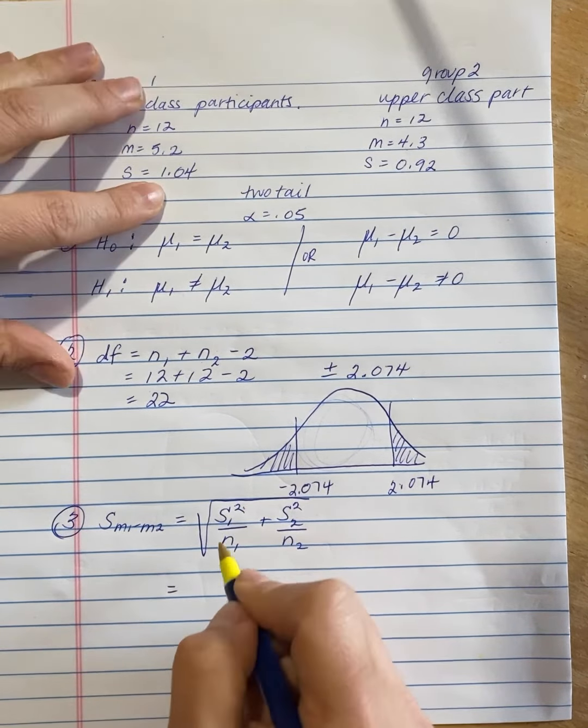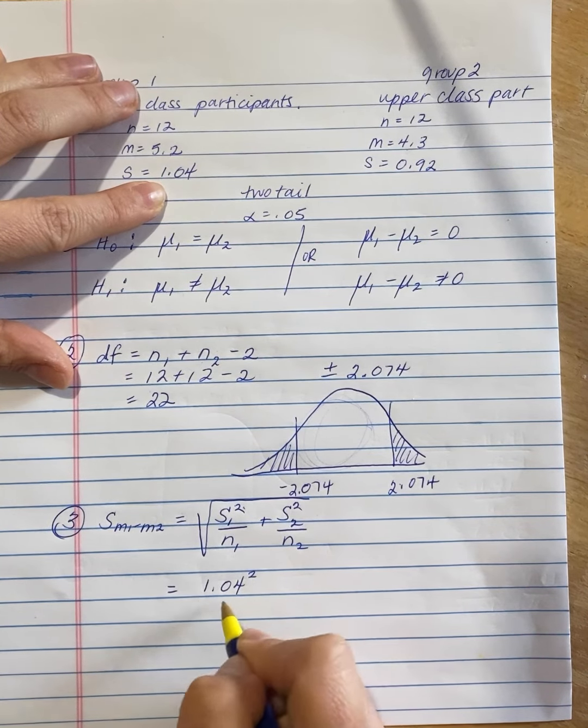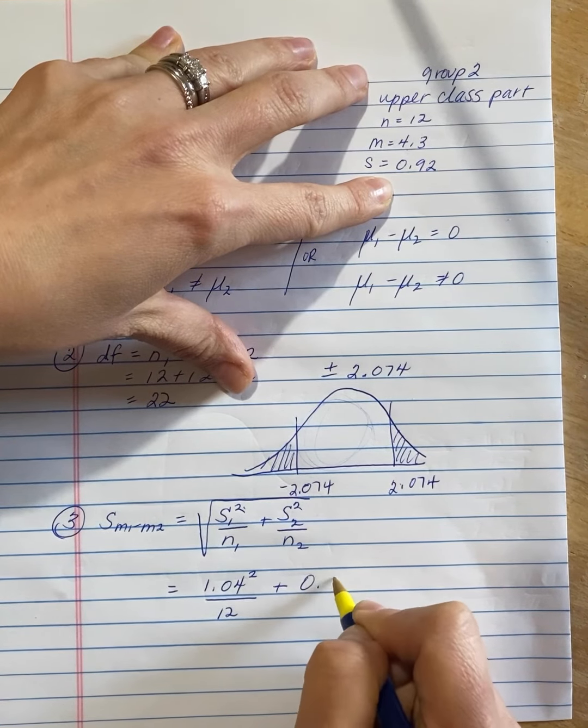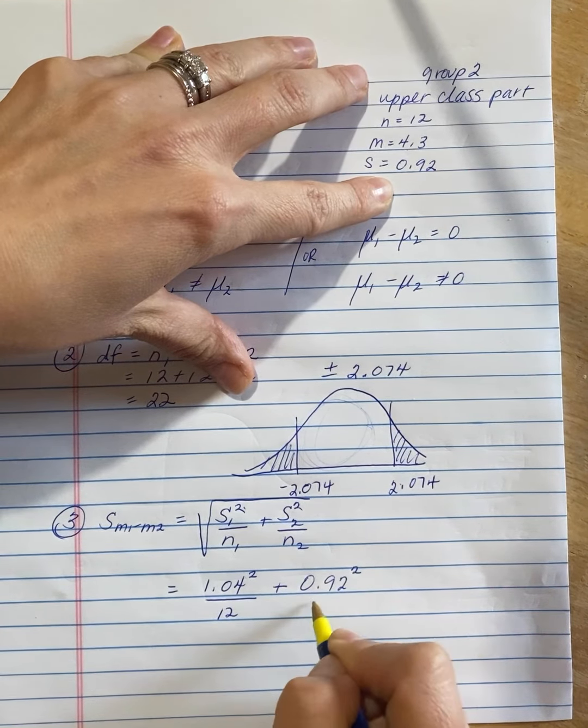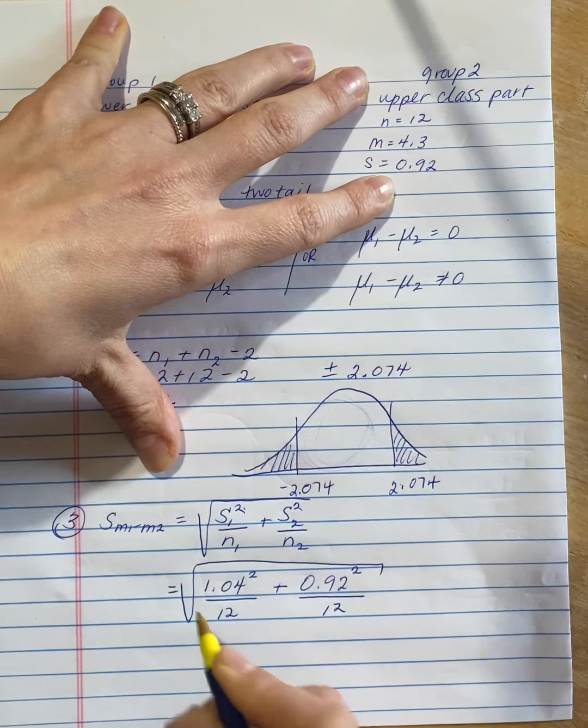So we are going to take 1.04, we're going to square it and then divide by 12. And we're going to take the other, 0.92, we'll square that and then divide by 12. And then take the square root of the whole thing.